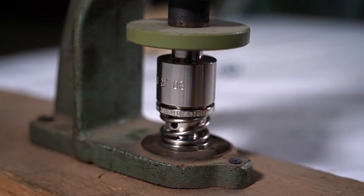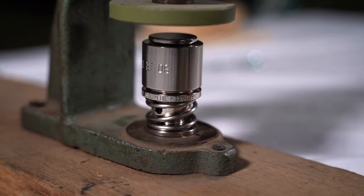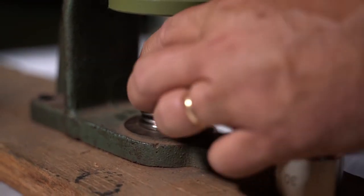Place the top die over the button die and bring the handle down with a firm, even pressure to secure the entire button together.